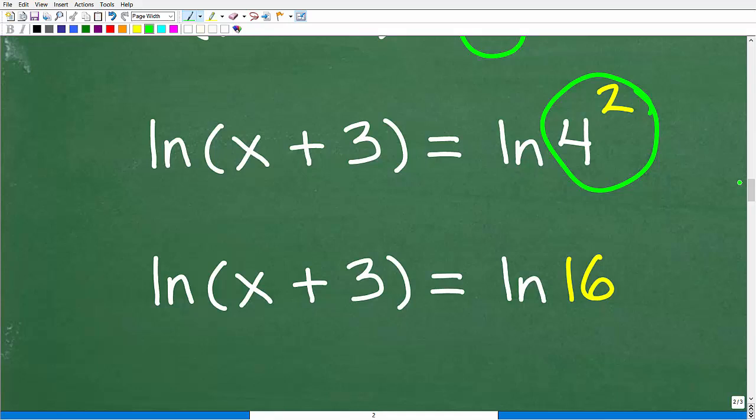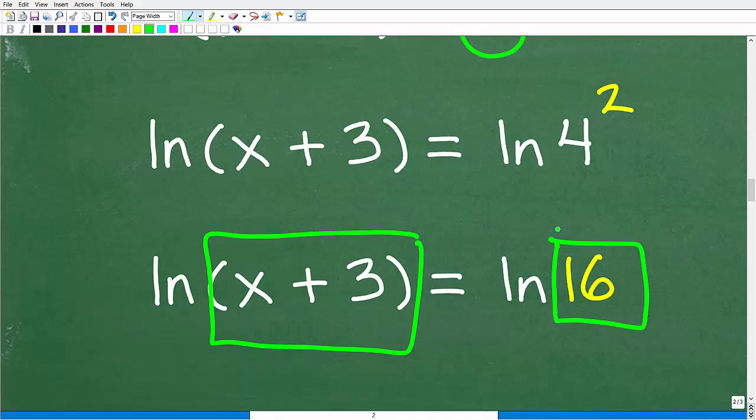We have ln 4 squared. So 4 squared is what? Well, if you said 16, Mr. YouTube Math Man, I would be like, wow. You are definitely on the ball today. So 4 squared is indeed 16. So here is our equation at this point. Again, if you have a basic understanding of logarithms, you get this. Let's just take a look at this problem. Ln of this is equal to ln of this. We have an equation.